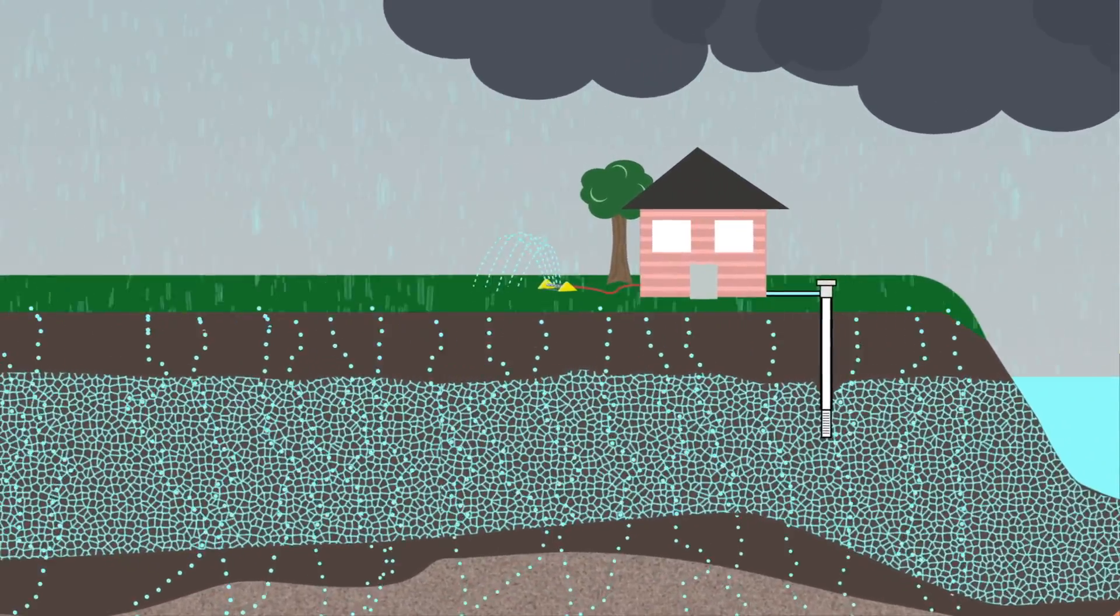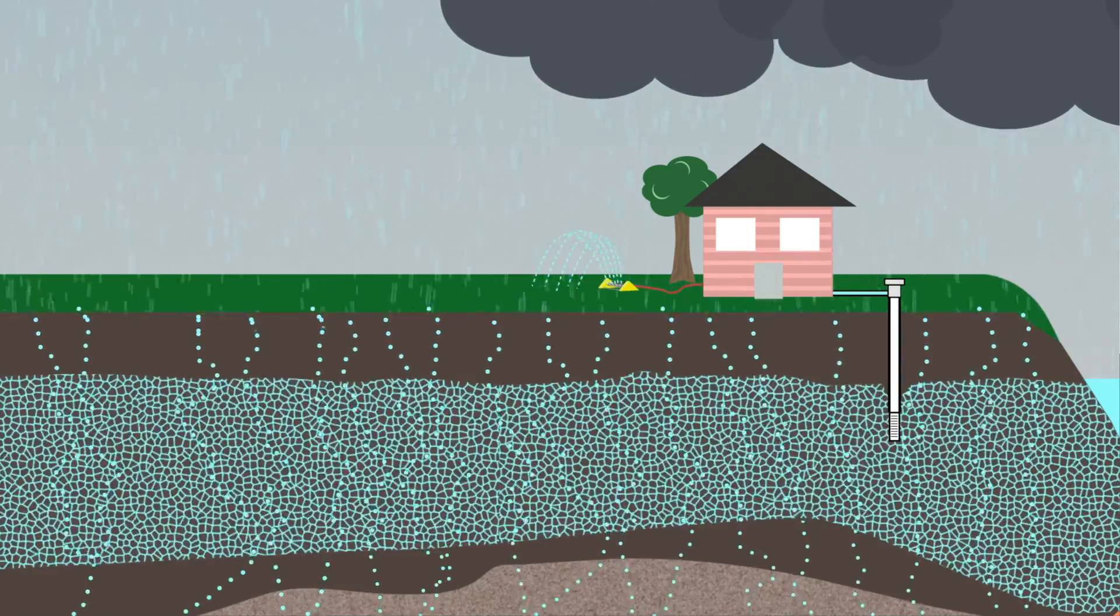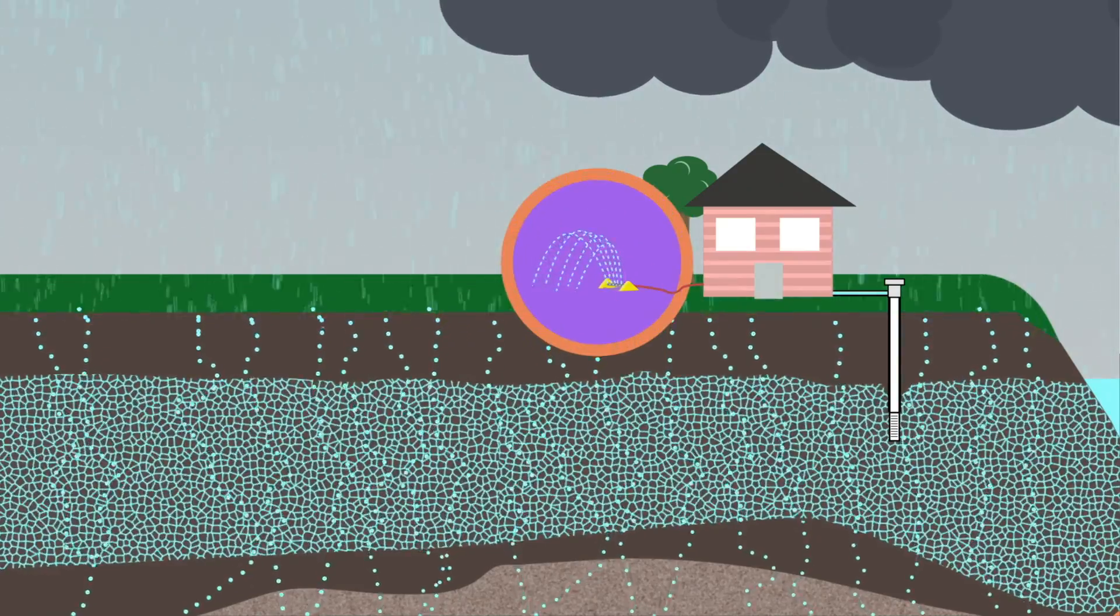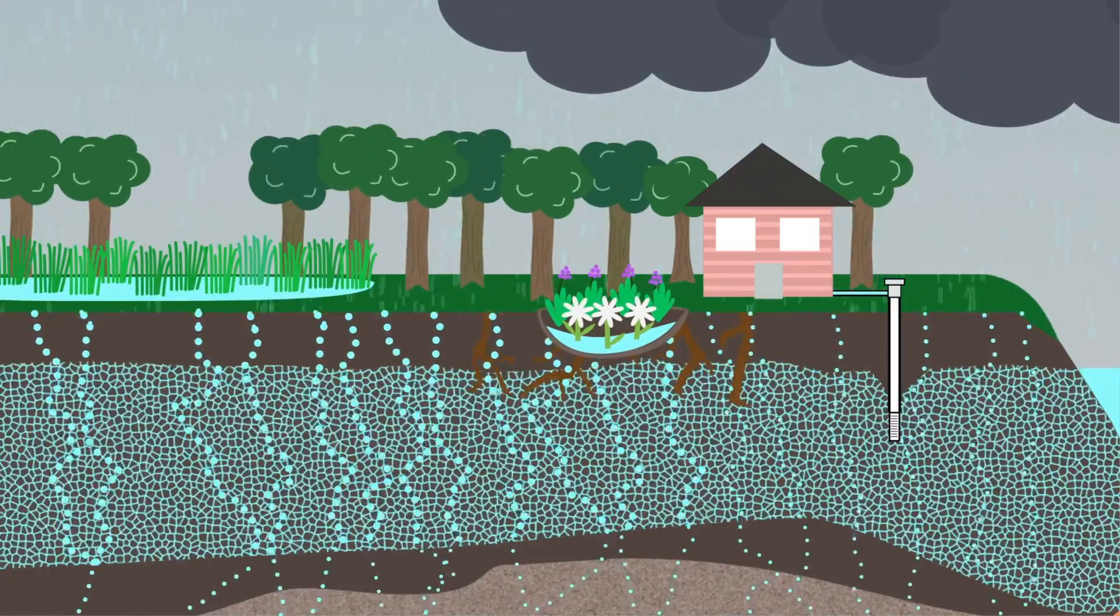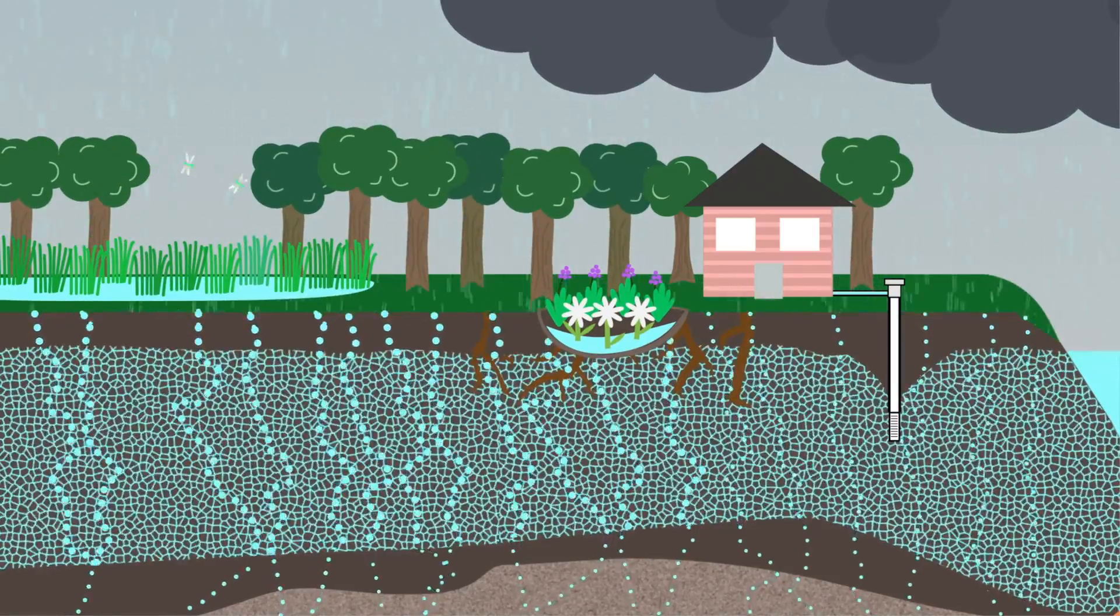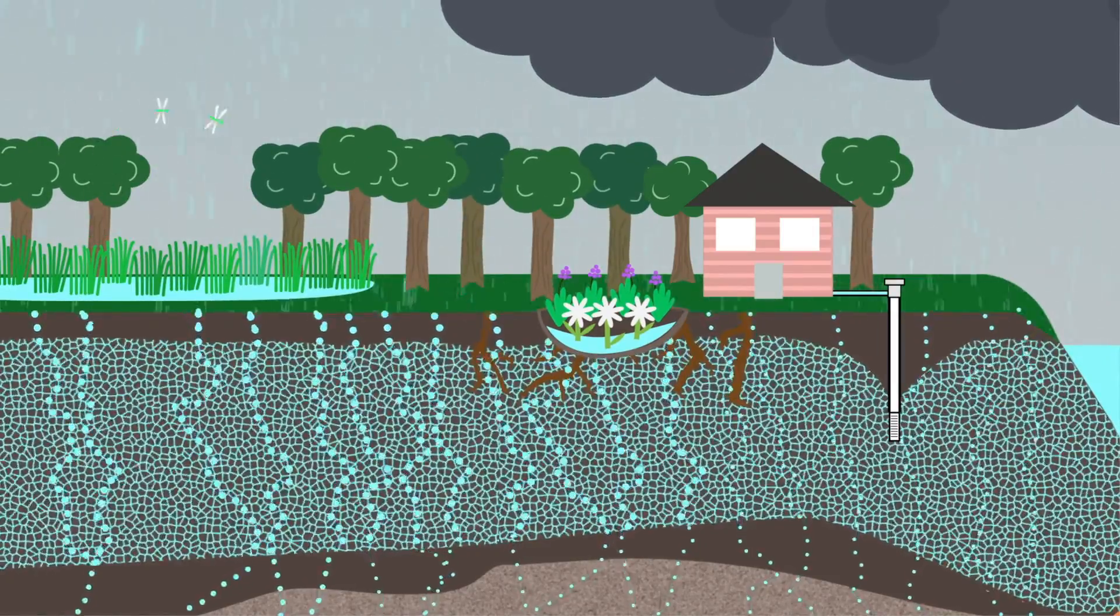We can ensure a healthy supply of water for future generations by cutting back on wasteful irrigation and maximizing our groundwater paycheck with tools like rain gardens and protected natural spaces that help water soak into the ground.